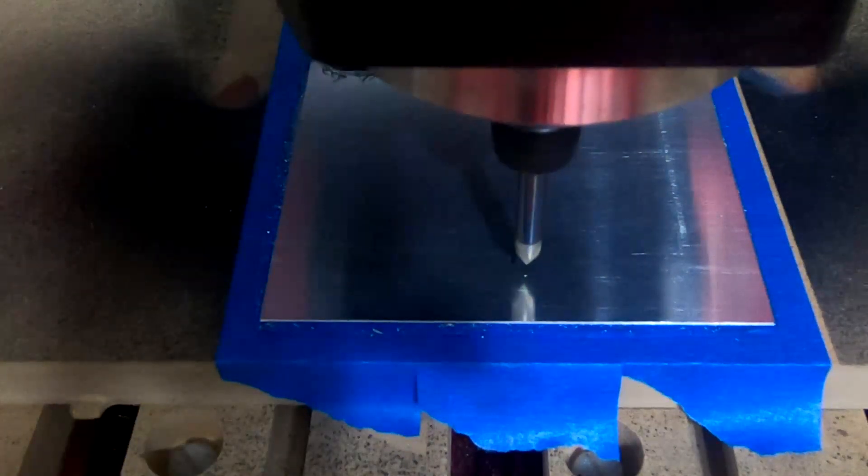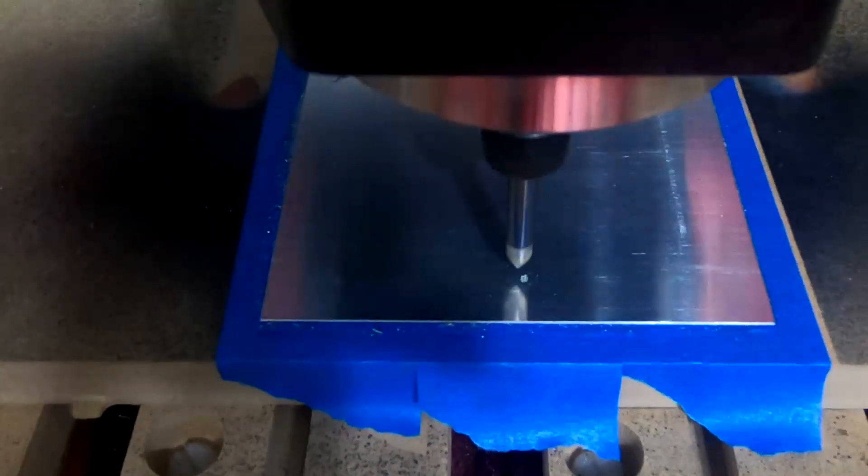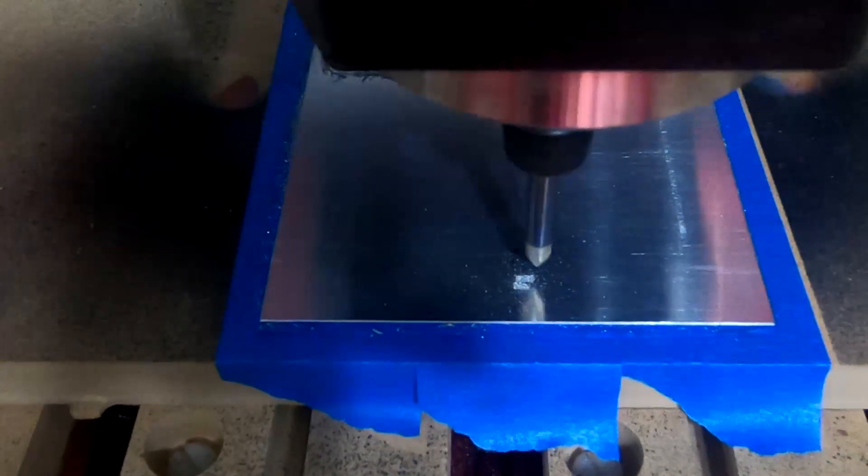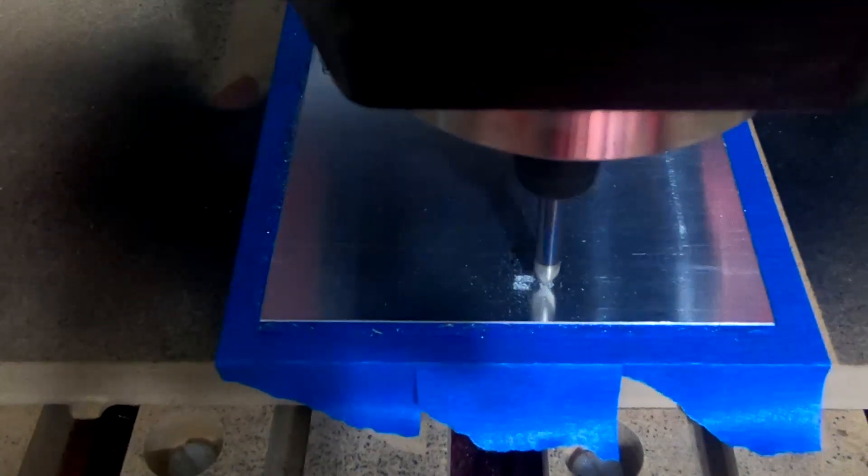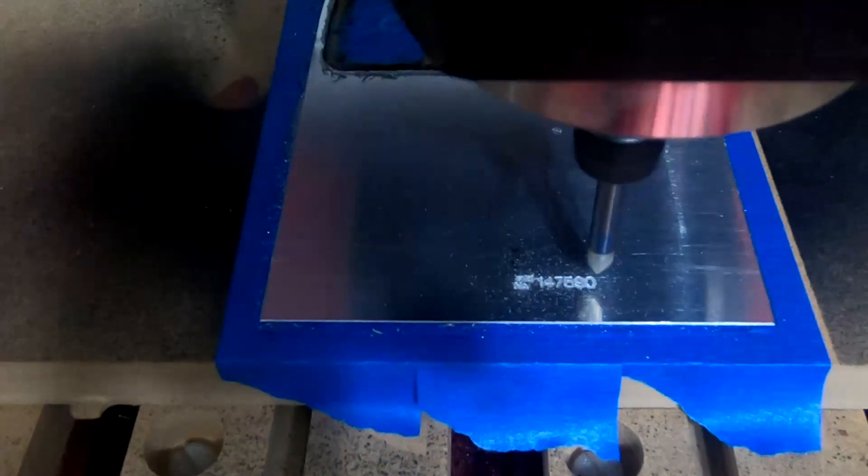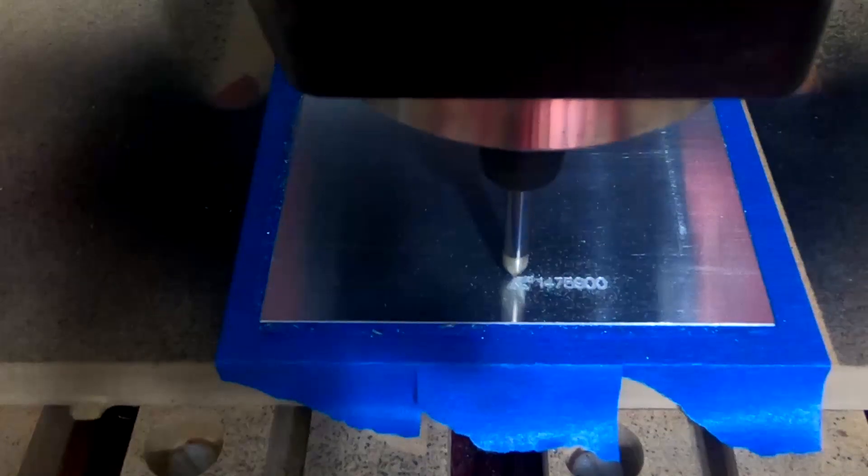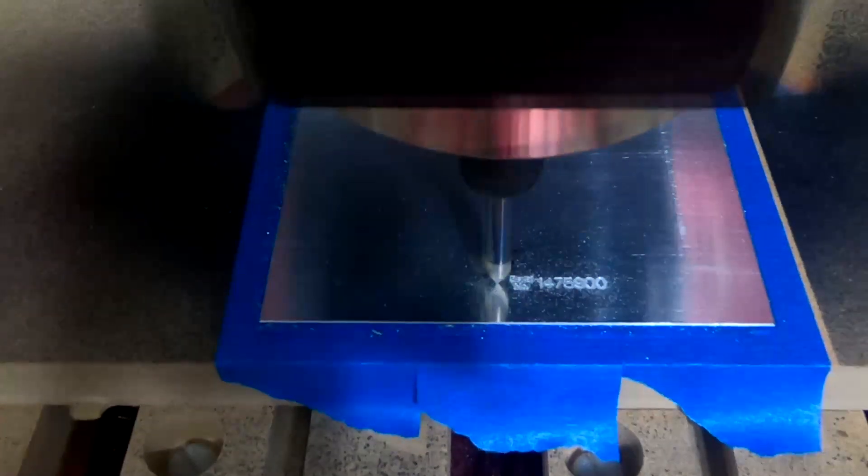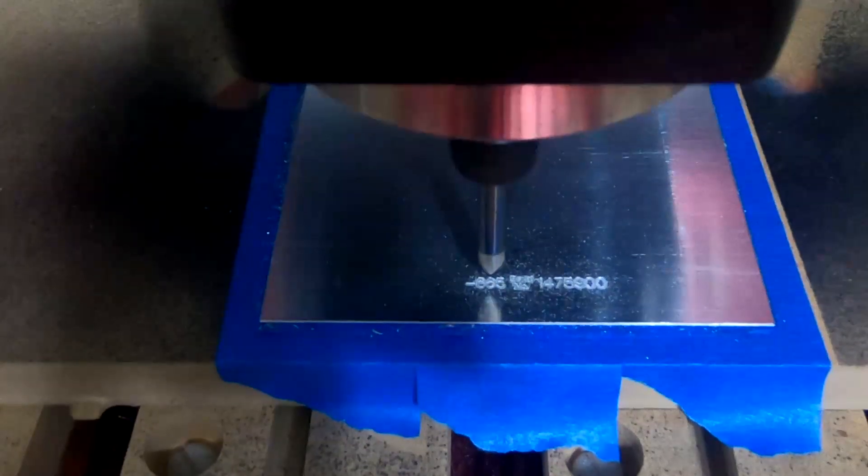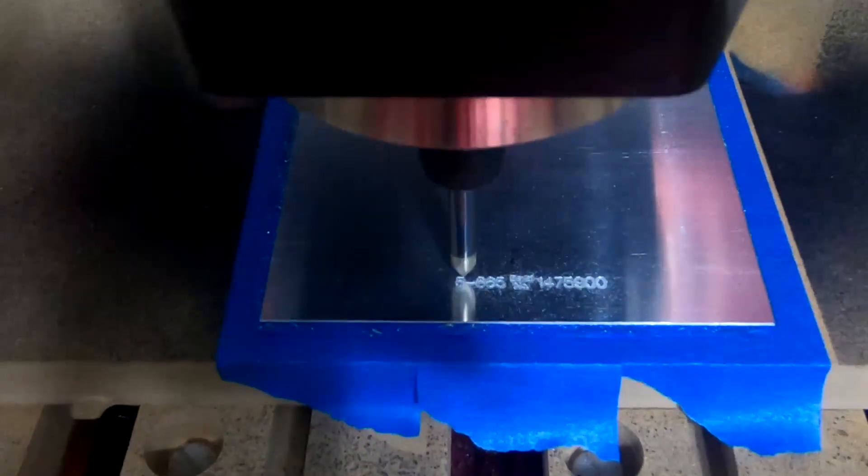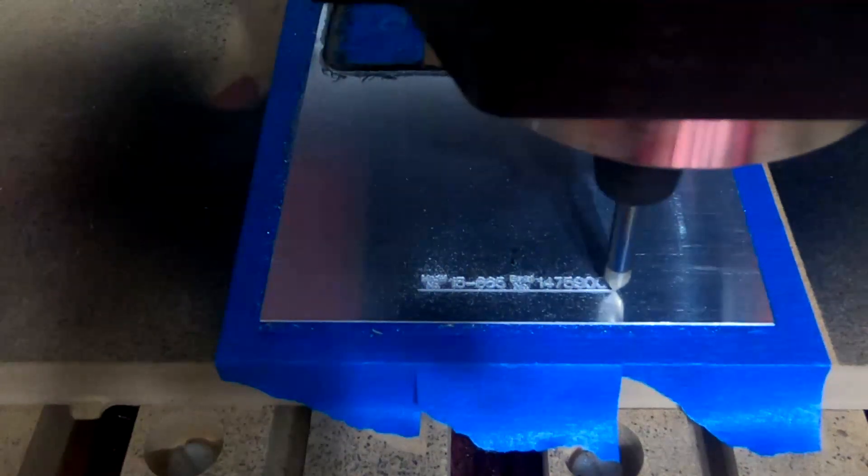This is a profile toolpath with a 60 degree V-bit. It's going to do the model and serial number, and then the profile around the edge, and then the little circles around the R for the Rockwell. I did not know how this was going to work out. I found the feed and the speed and plunge and everything pretty quickly, and it worked out amazing. So you can't see it real clearly yet, but that's obviously the model and the serial number. But it also says model number and serial number, and now it's doing the perimeter around it.